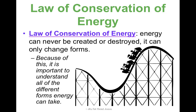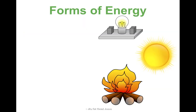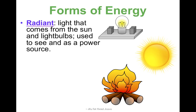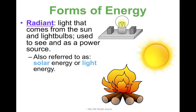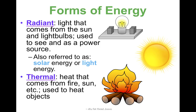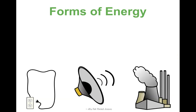But we're going to learn some more. Based on these pictures, you may be able to guess. This is radiant energy — you could also say solar energy or light energy; they're all referring to the same thing. This is just light that comes from the sun and light bulbs. The use of radiant energy is to see, and also as a power source. Things that tend to give off radiant energy also give off thermal energy, which is heat — that just comes from fire or the sun — and we use thermal energy to heat things.